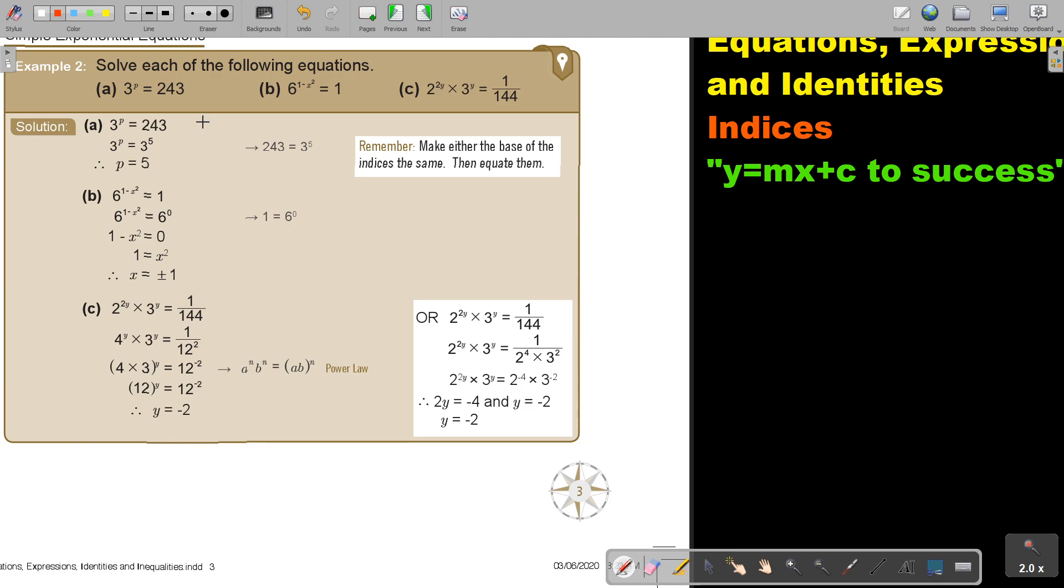I get 3 to the power of 5. Can you remember? That's basically dividing by 3 repeatedly, and so on. And then, as soon as the bases are the same, you can say p equals 5.